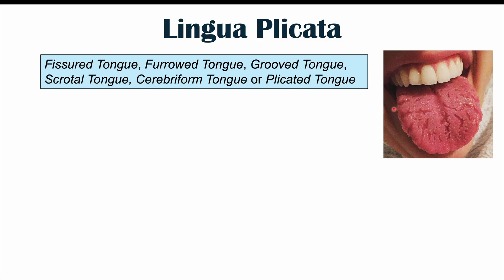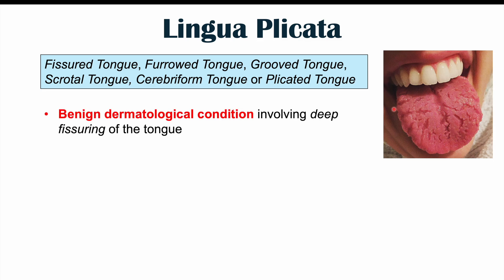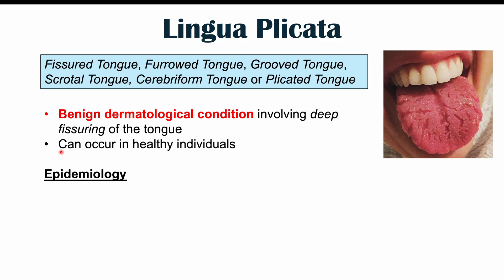Lingua plicata is a benign condition that involves deep fissuring of the tongue — these big deep ridges or fissures. This can occur in healthy individuals and can be very prevalent, affecting up to 20% of the general population.